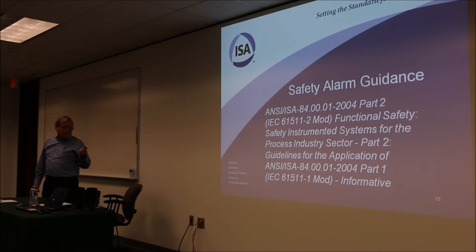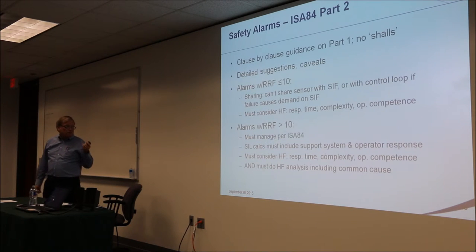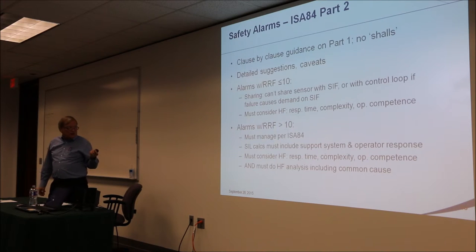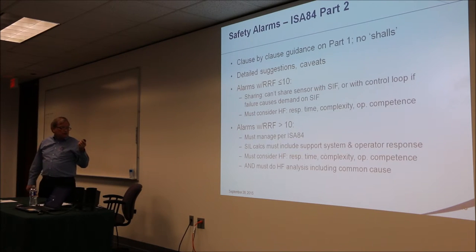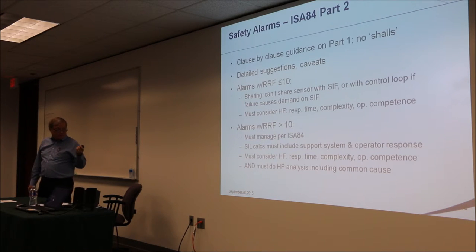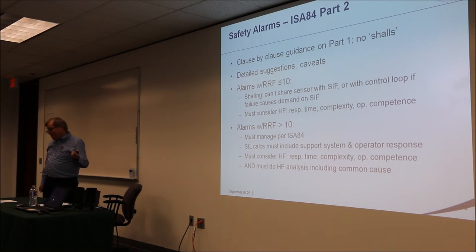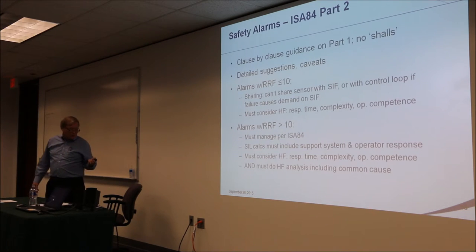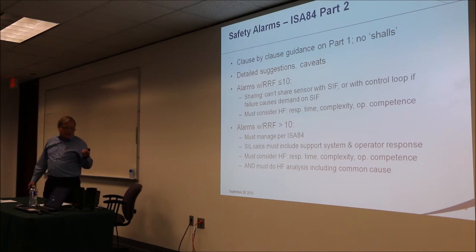Part 2 is non-normative — it doesn't have shall statements — but it has important clause-by-clause guidance on Part 1, with several clauses that touch on safety alarms. Most notably, it provides advice on risk reduction claims for less than 10 and greater than 10. ISA 84 clearly states that any function claiming more than a risk reduction of 10 needs to be managed per ISA 84. Part 2 echoes that requirement and points out that SIL calculations need to include the operator and the support system — power, logic solver, display screens — and that a human factors analysis including common cause is required for risk reduction greater than 10.